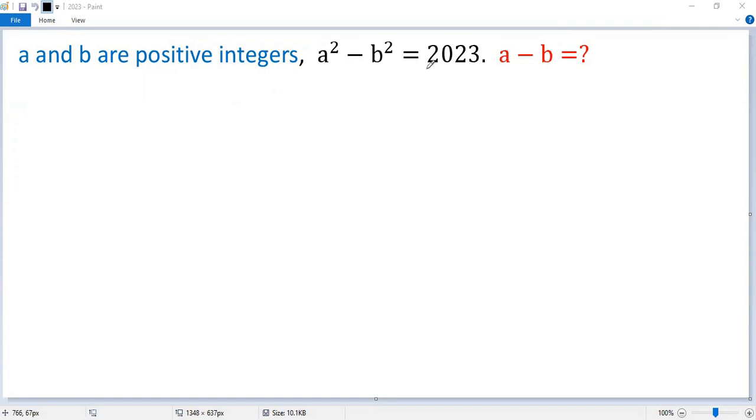It turns out 2023 equals 7 times 289. 17 squared equals 289, so we get 7 times 17 times 17.